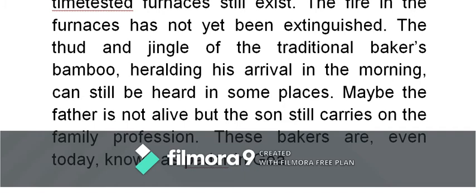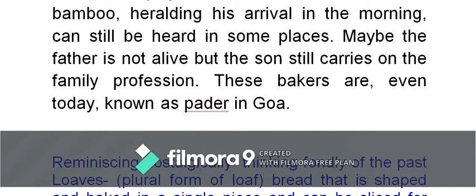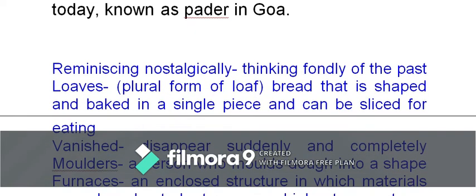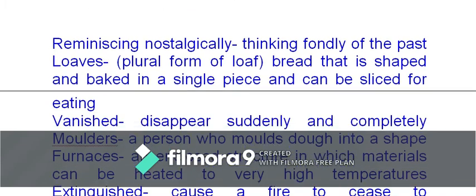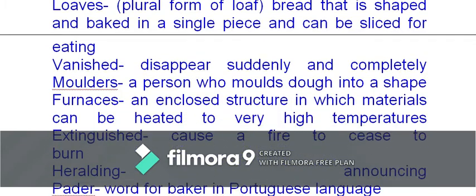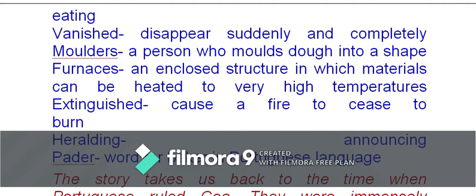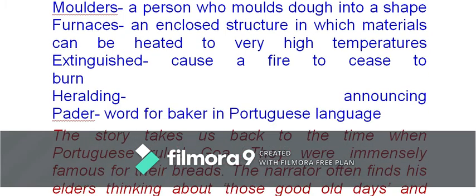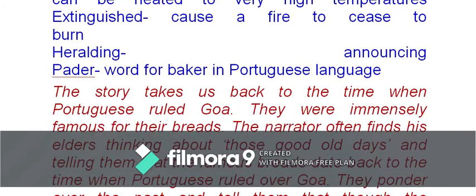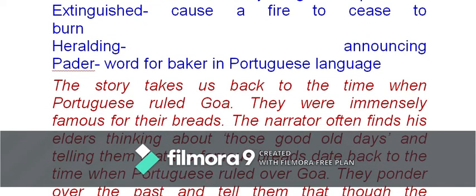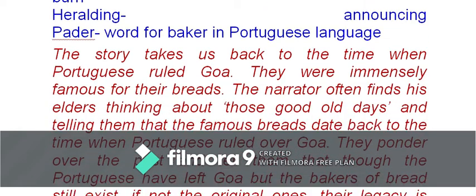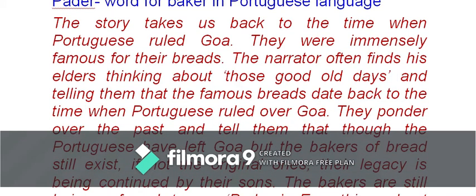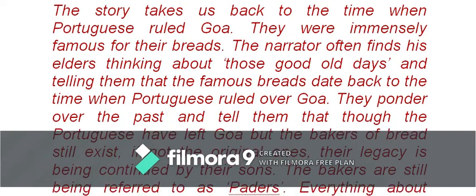Maybe the father is not alive, but the son still carries on the family profession — passed on from generation to generation. These bakers are even today known as 'padders' in Goa. Vocabulary: reminiscing and nostalgically mean thinking fondly of the past; loaves are bread shaped in longer, single pieces; vanished means disappeared; molders are persons who mold the dough; furnace is made with brick and stone at high temperature for baking; extinguished means to put out the fire; heralding means announcing or calling out; padder is the traditional Portuguese word for the baker.